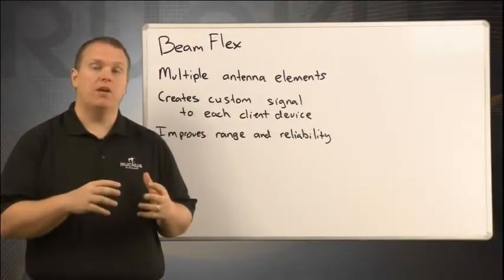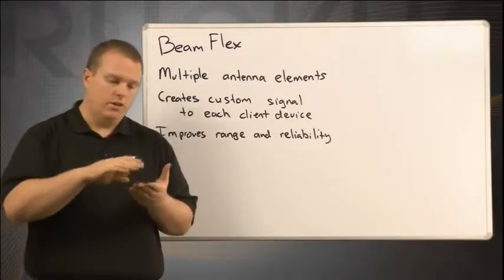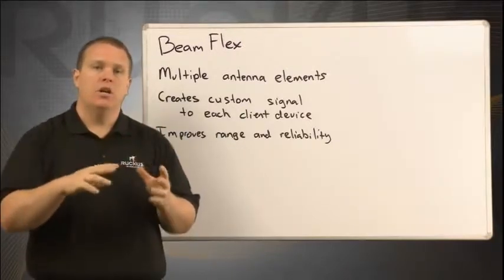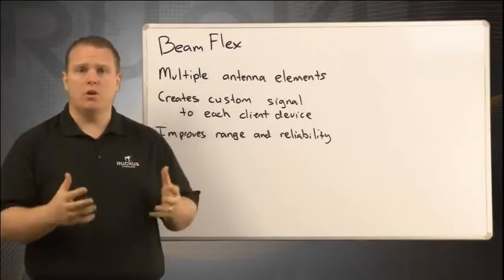Most access points you're familiar with will have omnidirectional antennas. They're what we call the little rubber duckies. They stick up, they send all the signal around, and that's it. Those have traditionally worked okay.